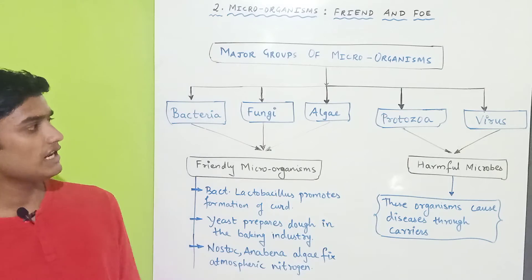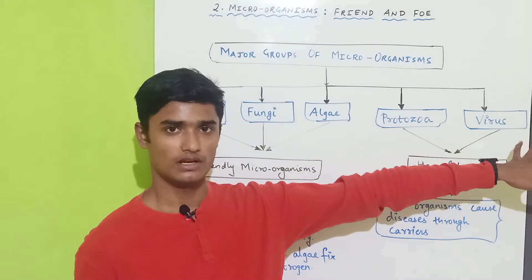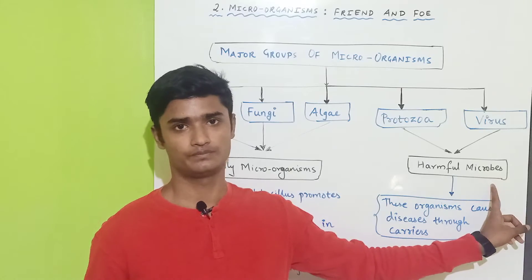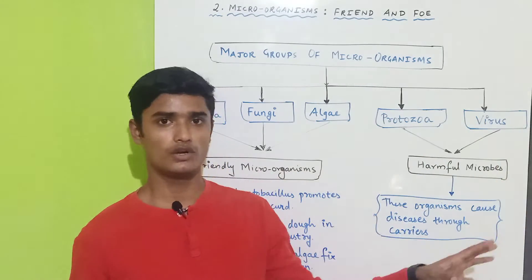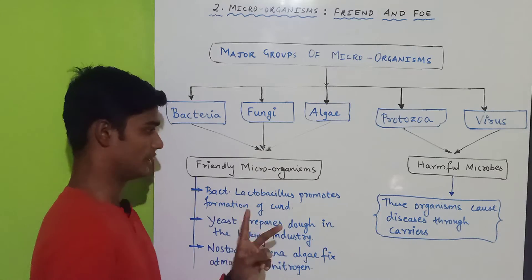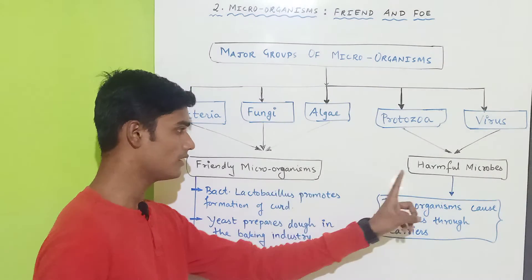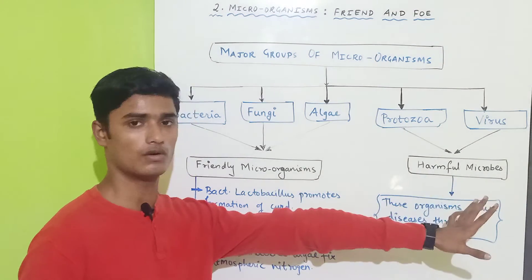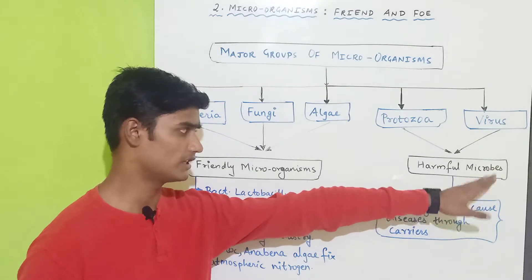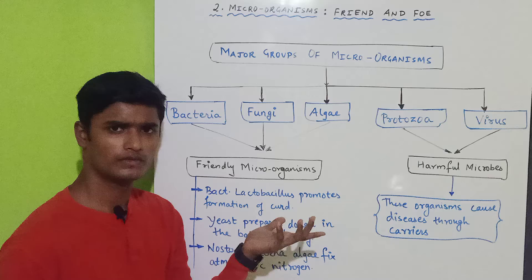The remaining two groups — protozoa and viruses — are generally harmful microbes. So we now have two categories: friendly microorganisms and harmful microbes. 'Microbes' is just another word for microorganisms.